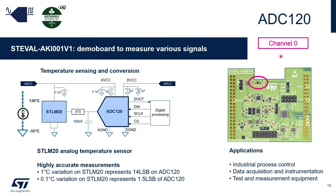On channel 0, there is a temperature sensor from ST, the STLM20. The ADC measures directly the output of the sensor, so the output voltage is the image of the temperature. The corresponding value in degrees Celsius is given by a specific equation in the user manual. For example, a variation of 0.1 degrees Celsius on the STLM20 represents 1.5 LSB of ADC120. On the picture on the right, you can see the location of the sensor.